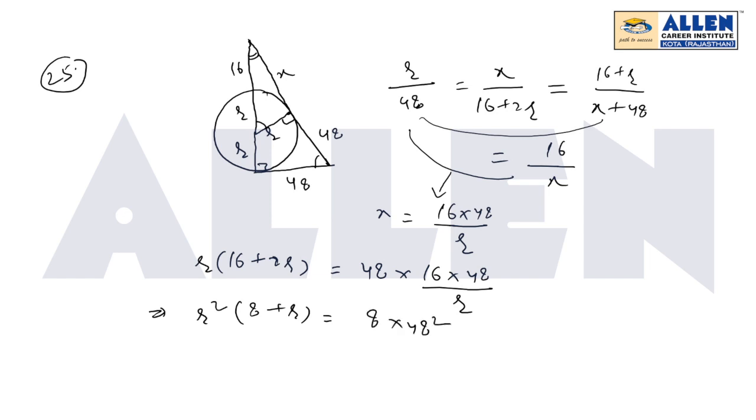So that is a cubic expression, we need to go via the hit and trial method. But here one can see if I write 48 as 24 into 4 into 2, which means it is 24 squared. We need to generate a square over here. So 2 squared becomes 32.